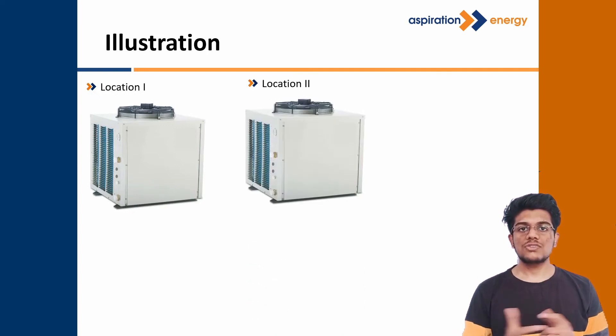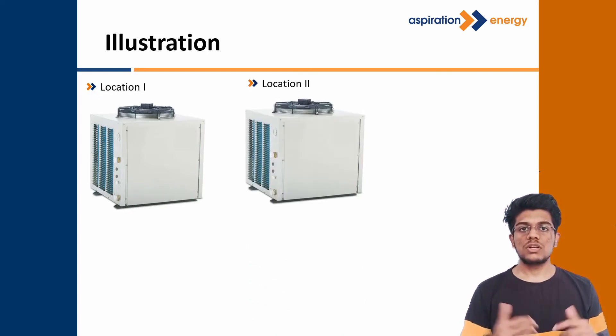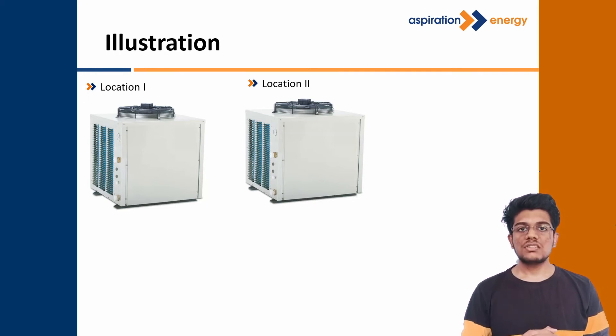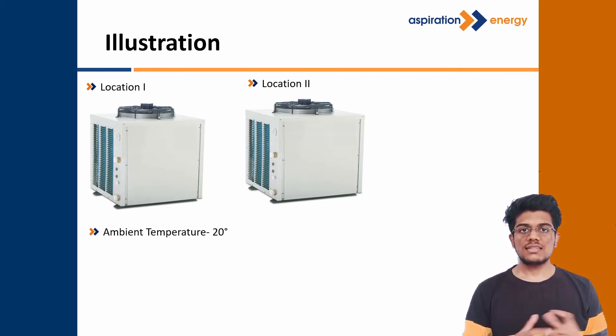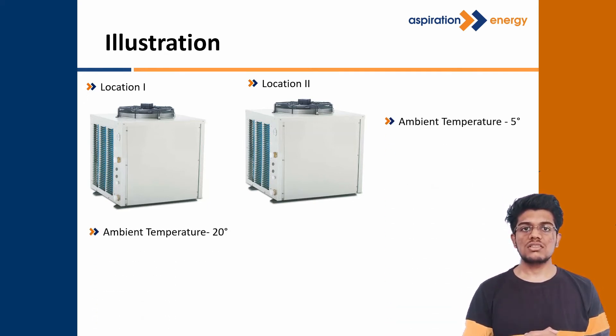Assume there are two 28 kW air source heat pumps installed at two different locations. At location 1, the ambient temperature is around 20 degrees, whereas at location 2, the ambient temperature is around 5 degrees.